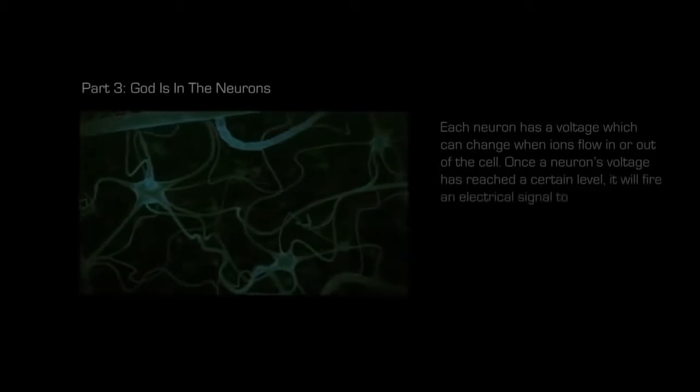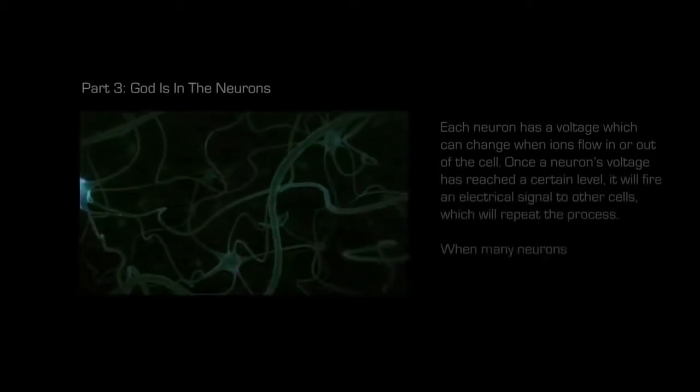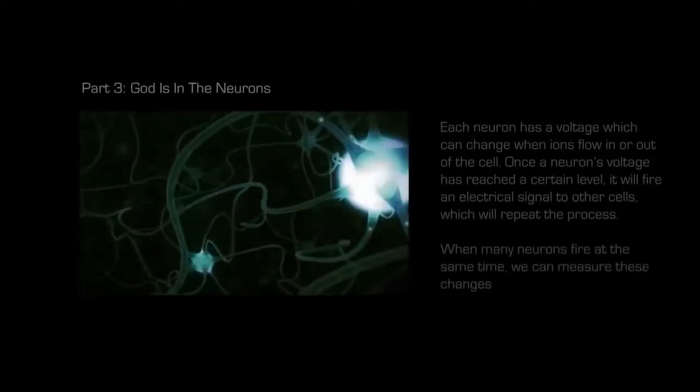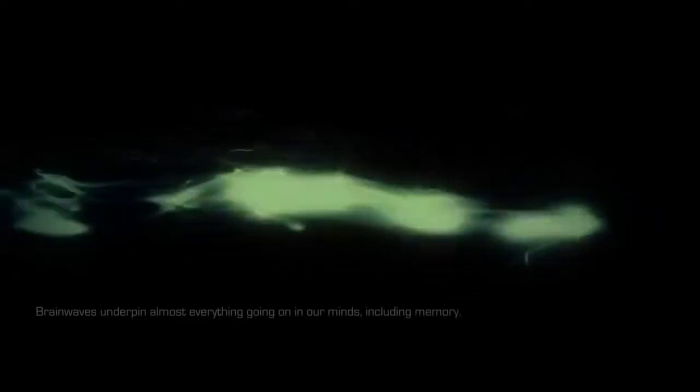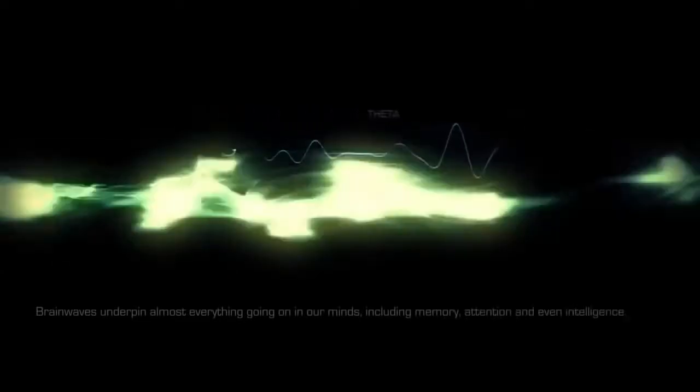Each neuron has a voltage which can change when ions flow in or out of the cell. Once a neuron's voltage has reached a certain level, it will fire an electrical signal to other cells, which will repeat the process. When many neurons fire at the same time, we can measure these changes in the form of a wave. Brain waves underpin almost everything going on in our minds, including memory, attention, and even intelligence.